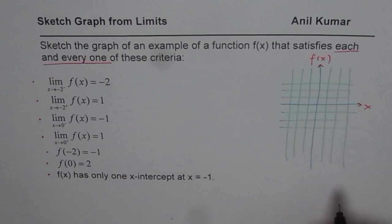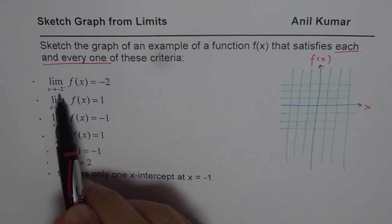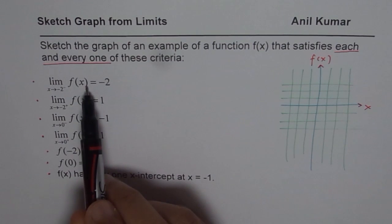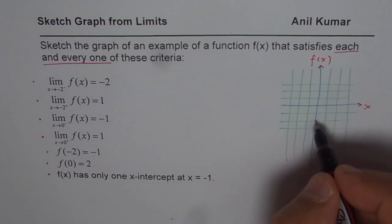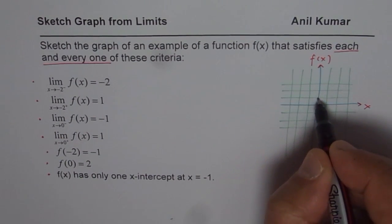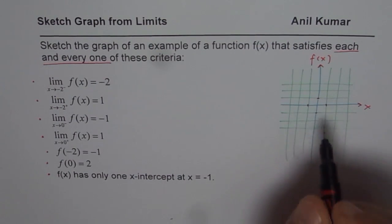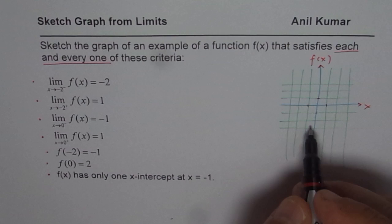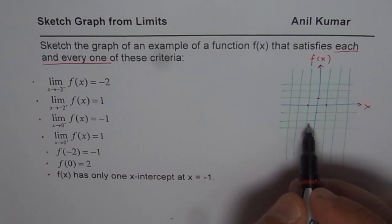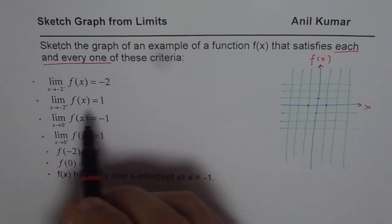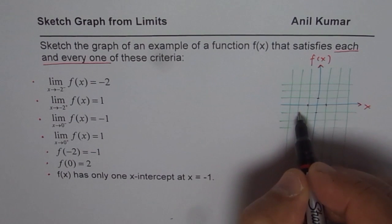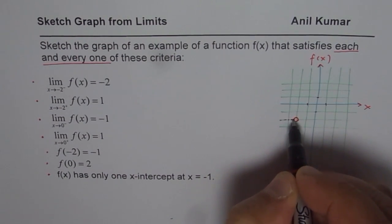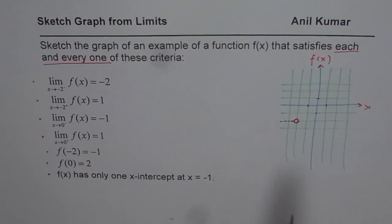We are looking for the one-sided limit at x = -2 from the left, which is -2. Remember, the limit is the value you are approaching, not the point where you are. So at x = -2, I will make a hole here, and we are approaching from the left side, so I write a small dash to indicate we are approaching from the left.